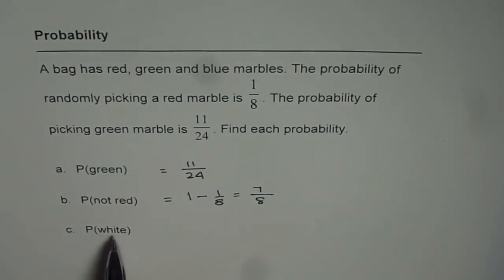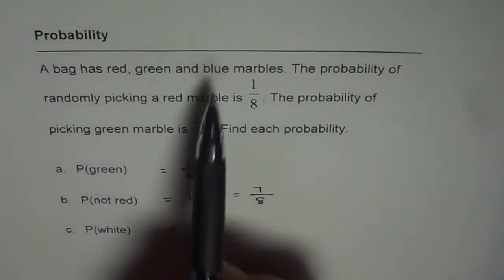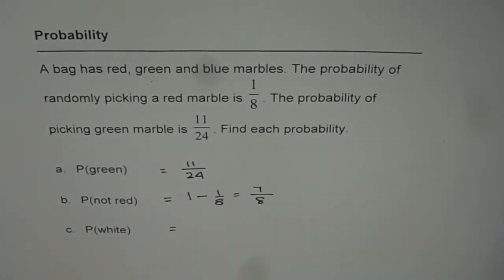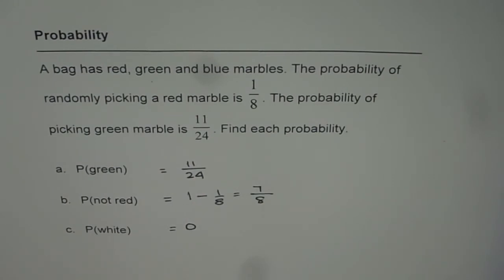Now, how about the probability of picking white? The bag contains red, green and blue marbles. There are no white marbles, so this probability is 0. In other words, impossible.